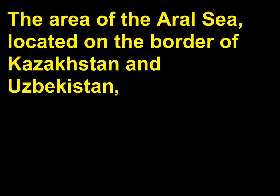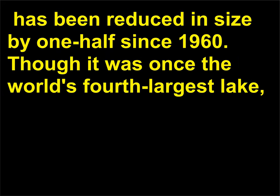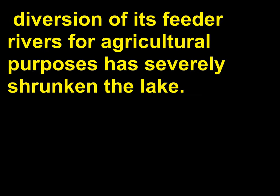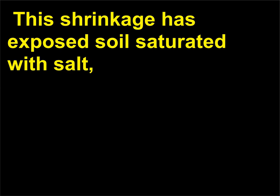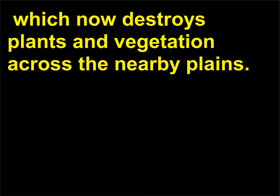Why is the Aral Sea shrinking? The area of the Aral Sea, located on the border of Kazakhstan and Uzbekistan, has been reduced in size by one-half since 1960. Though it was once the world's fourth largest lake, diversion of its feeder rivers for agricultural purposes has severely shrunk the lake. This shrinkage has exposed soil saturated with salt, which now destroys plants and vegetation across the nearby plains.